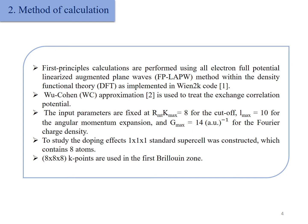To study the doping effects, a 1×1×1 standard cubic cell was constructed which contains 8 atoms, and 8×8×8 k-points are used in the first Brillouin zone.